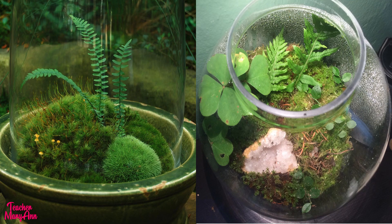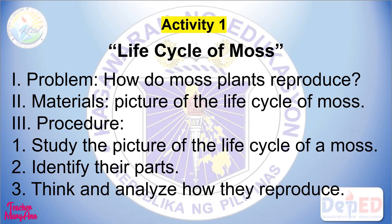Now take a look at this terrarium with many moss and ferns. Today we're going to describe the different modes of reproduction of moss and ferns. Let's have our first activity, entitled Life Cycle of Moss. The problem is: how do moss plants reproduce? The materials that you need: a picture of the life cycle of moss. The procedures: study the picture of the life cycle of a moss, identify their parts, and think and analyze how they reproduce.